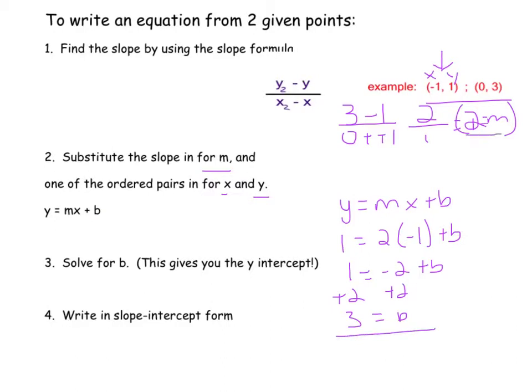Now I have my y-intercept, I have my slope. So slope-intercept form, y equals 2x plus 3. And that is where you can stop.